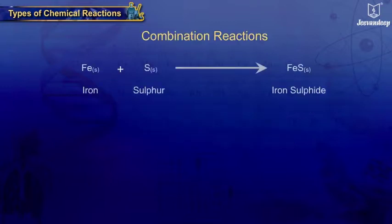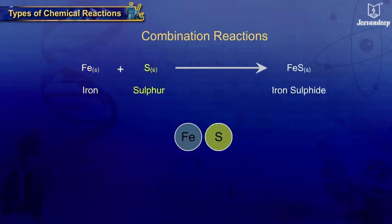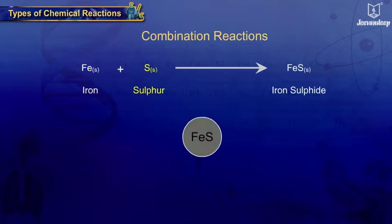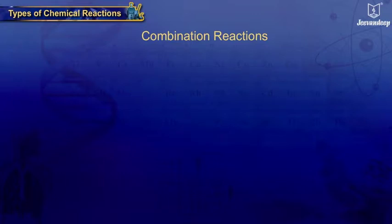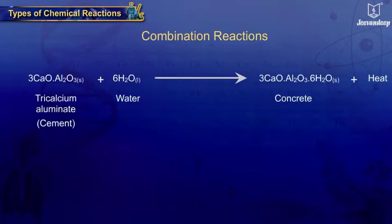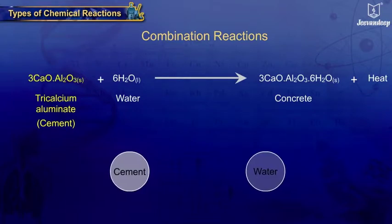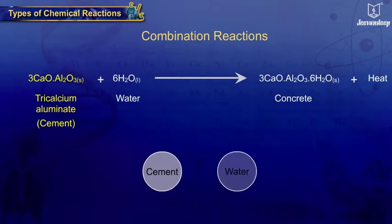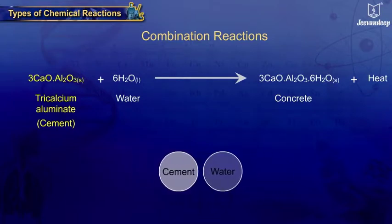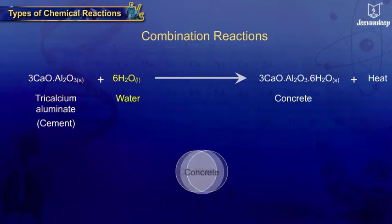Here, iron combines with sulfur to give a molecule of iron sulfide. In another case, tricalcium aluminate — that is, cement — combines with water to give concrete.